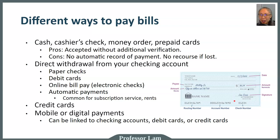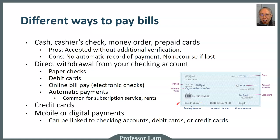For those who have not written a paper check before, there are a few important components. You need to put in the date and write out the name of the person you're paying. You also have to write out the amount in words in addition to writing it in numerals. Then there's your signature. On a check there are also a few important numbers: the routing number, which is the number for the bank; the account number, which is specific to you; and the check number, which is unique to that single check.